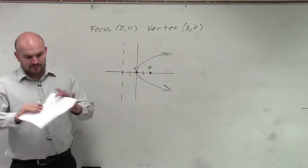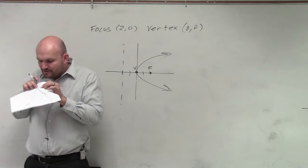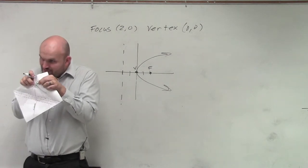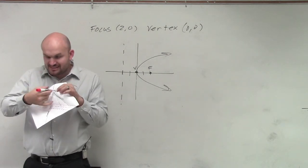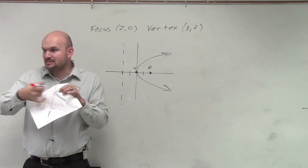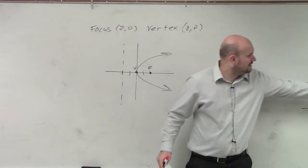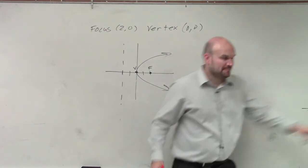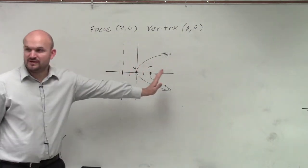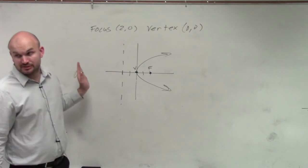Because remember, the vertex is right in between the focus and the directrix. The distance to the focus is the exact same distance to the directrix, just in the opposite direction. So if you go 2 to the focus, you go 2 in the opposite direction to get to the directrix.